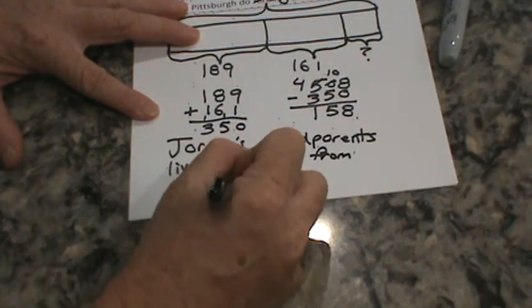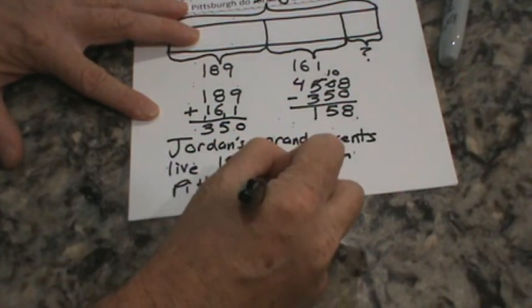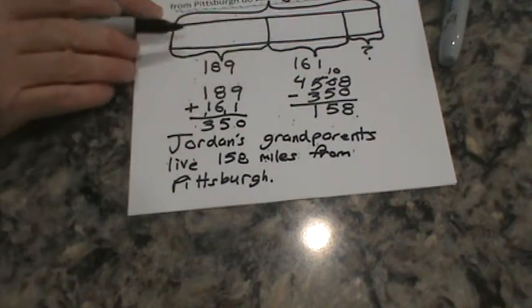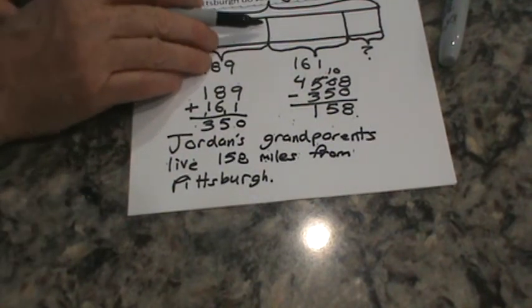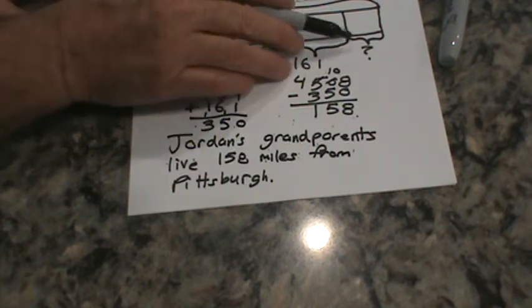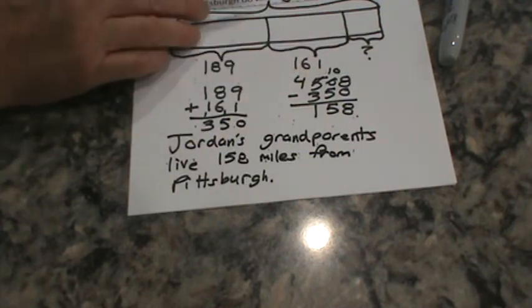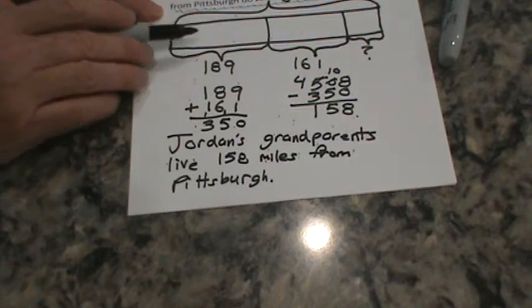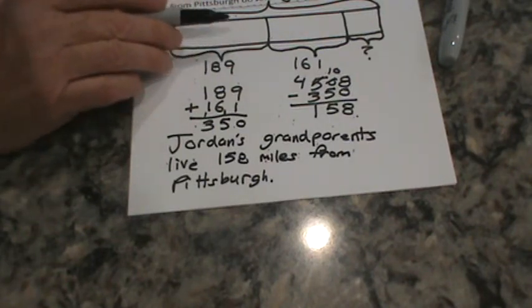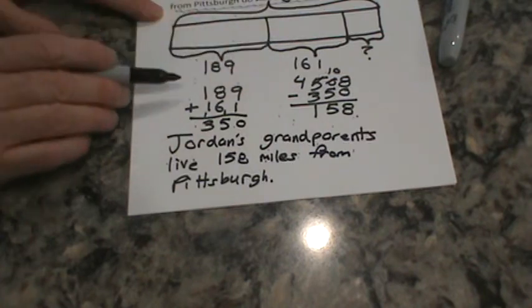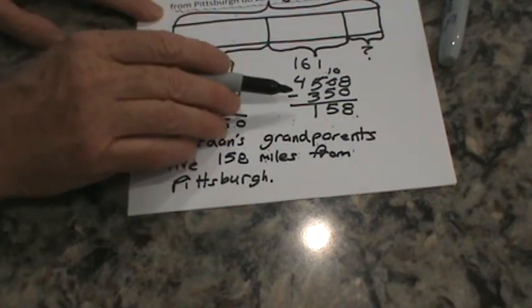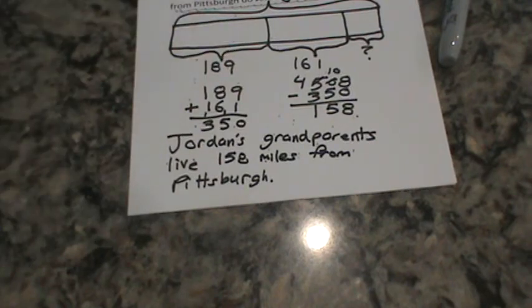I always wanted to go to Pittsburgh. And there we have it. So this was the total trip — from Jordan's home to Albany, Albany to Pittsburgh. What we didn't know was the distance from Pittsburgh to grandma's house. We did know it was a total of 508 miles. We added the distance from Jordan's home to Albany and from Albany to Pittsburgh — 350 miles — and the answer is 158 miles.